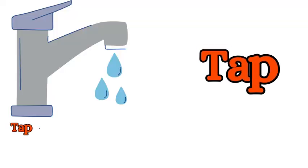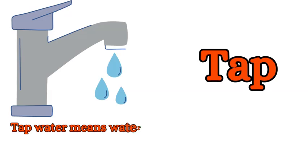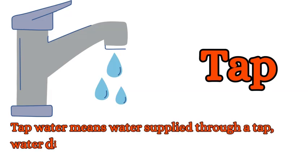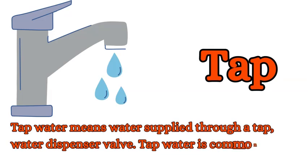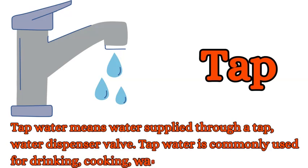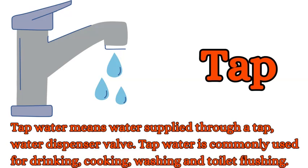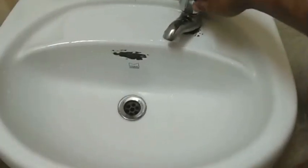Tap: tap water means water supplied through a tap, a water dispenser valve. Tap water is commonly used for drinking, cooking, washing, and toilet flushing.